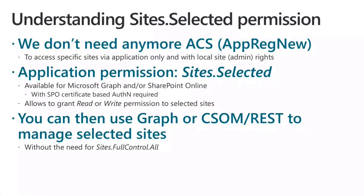Let me briefly explain the context, and then I would move to the demo environment. Most of us were used to using the app-req-new page to register through ACS and through the old-school SharePoint item model, client IDs and secrets, in order to access specific site collections with specific permissions. In the past, if we wanted an application running in background with application-only access mode, it was only possible to use the site.fullcontrol.all permission to access all of the content in a SharePoint Online tenant.